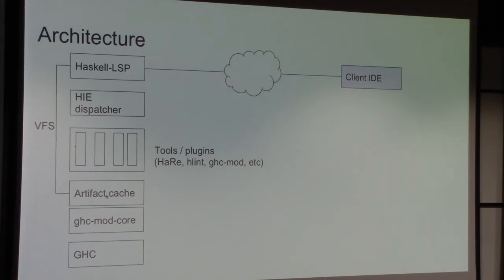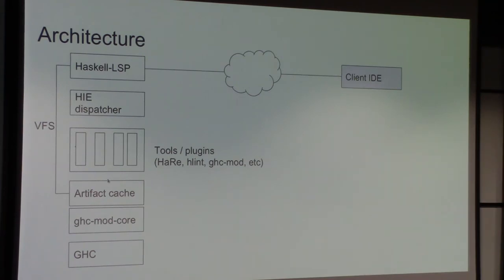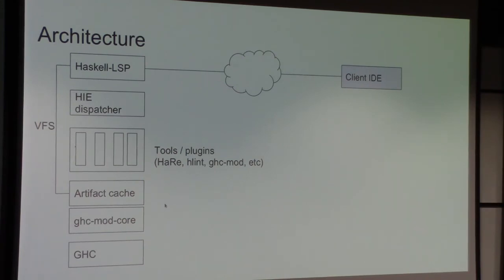GHC mod has been split in two — it's now a GHC mod core, and this cache is inside there. This is the general architecture of how it fits together. Do you also cache the type-checked modules? Yes, that actually caches the type-checked module. So you can ask for a type-checked module at any point, and this layer is exposed as a library. Outside of Haskell IDE Engine you can actually use it. For example, the next version of HaRe is going to go against the GHC mod artifact cache, so if you use it inside Haskell IDE Engine it'll use it, and if you use it outside you can also use it.